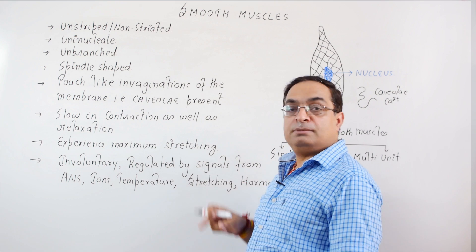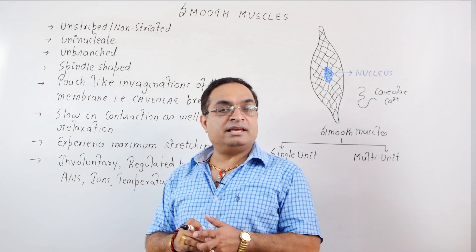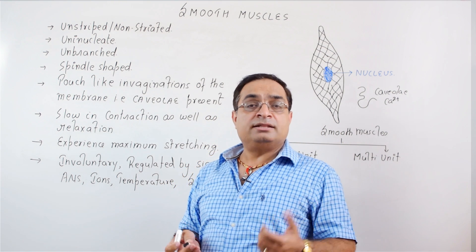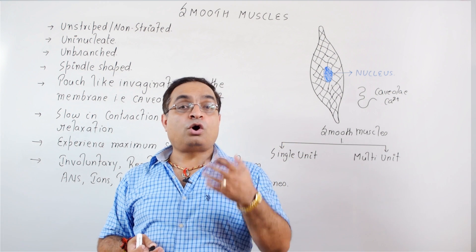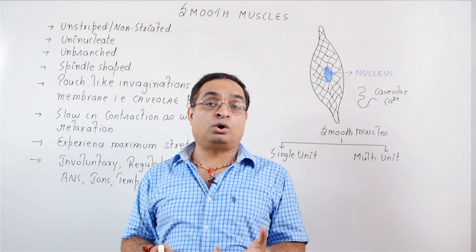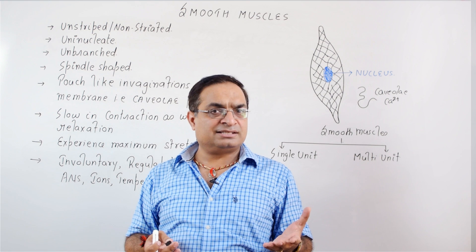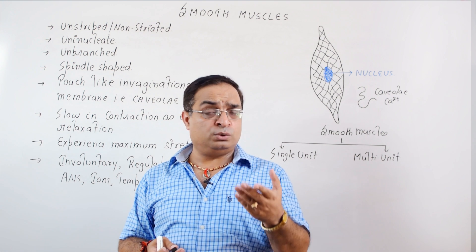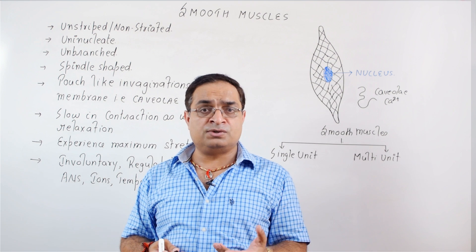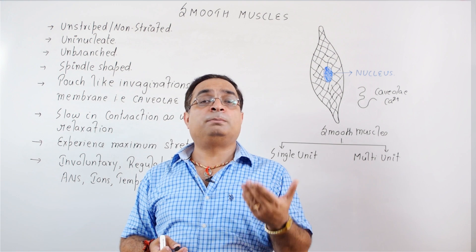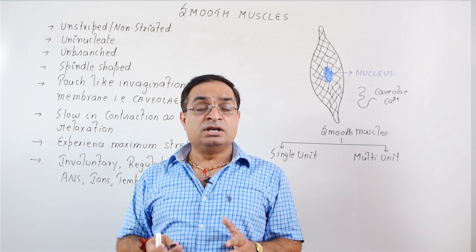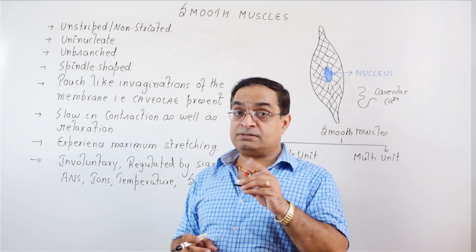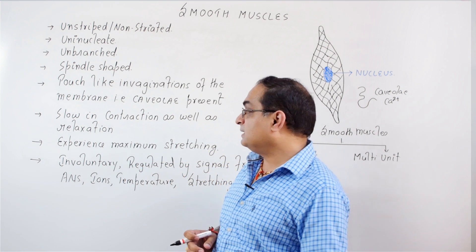Smooth muscles experience maximum stretching. They are present inside hollow organs, forming the lining of the intestine, small intestine, large intestine, stomach, wall of urinary bladder, wall of uterus, lining of blood vessels, and the respiratory tract. So smooth muscle fibers form the lining of hollow organs, which is why they are also called visceral muscles.